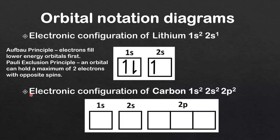Let's try another example. The electronic configuration of carbon is 1s2, 2s2, 2p2. We draw the orbital notation diagram by filling the 1s orbital first with 2 electrons with opposite spins, then the 2s orbital with 2 electrons with opposite spins, and then we move on to the 2p orbitals, placing 1 electron in one box and 1 electron in the next box. The order of placing these electrons is important.